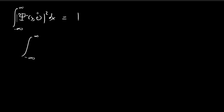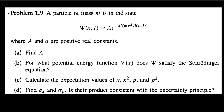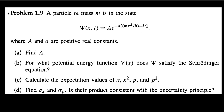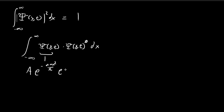The absolute value squared of the wave function is equal to the wave function multiplied by its conjugate. The wave function is composed of two separate sections: the constant A, and then e to the power of negative amx² divided by ℏ-bar — this term is entirely real with no imaginary components — and then the imaginary term e to the power of negative iωt.